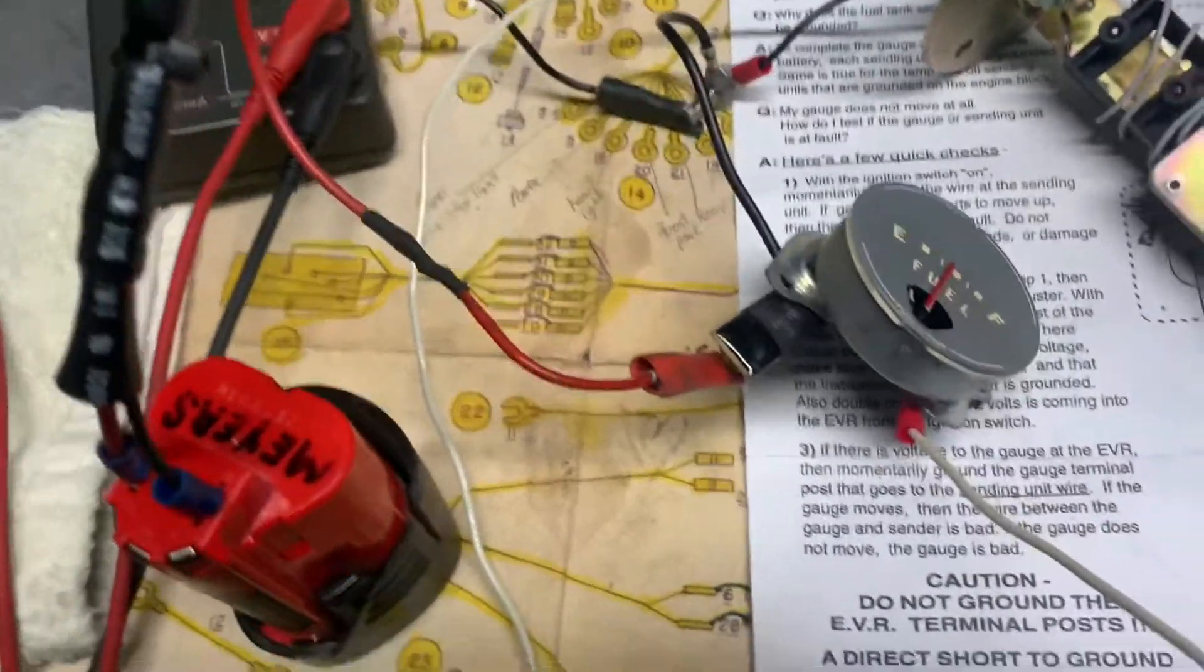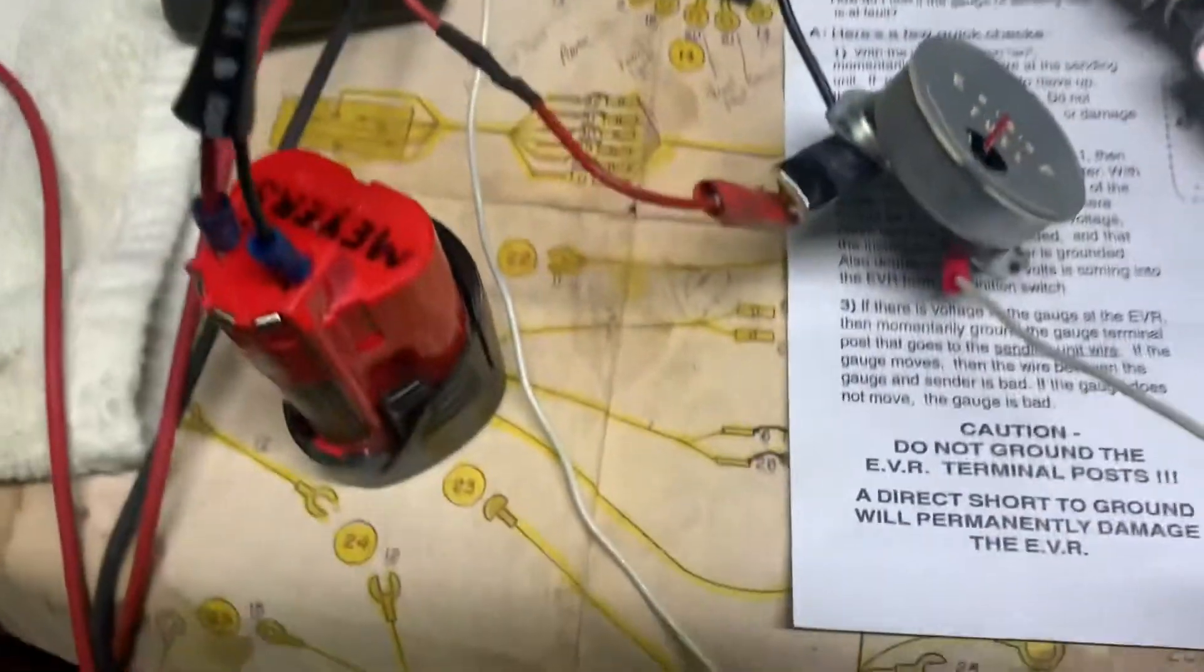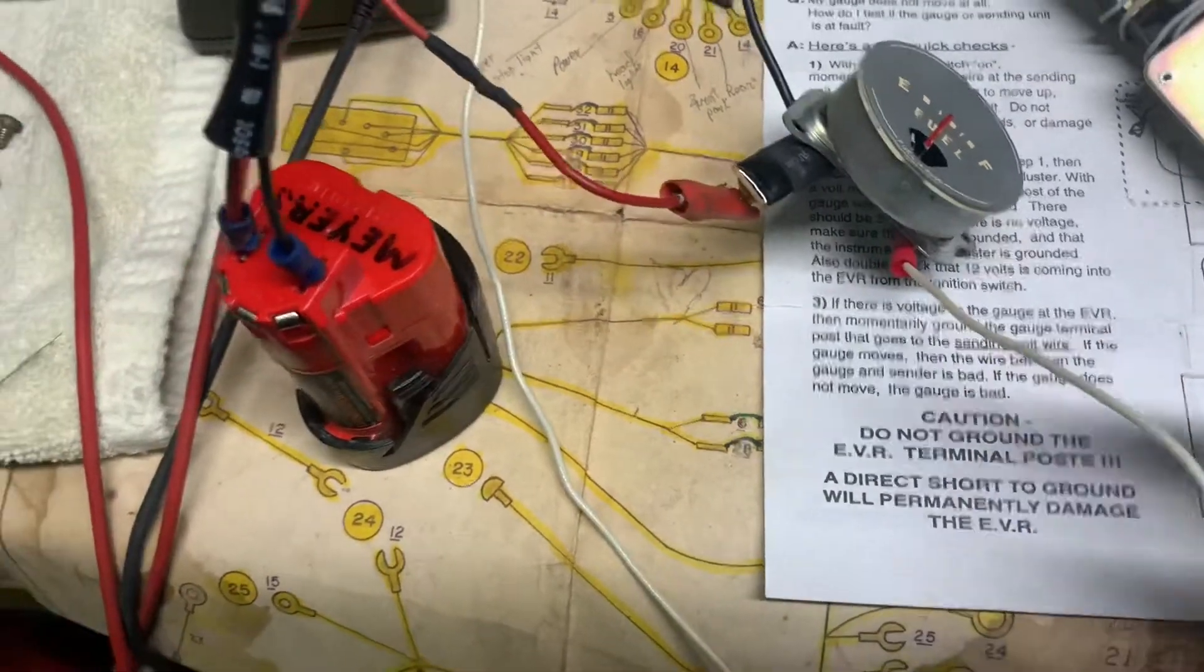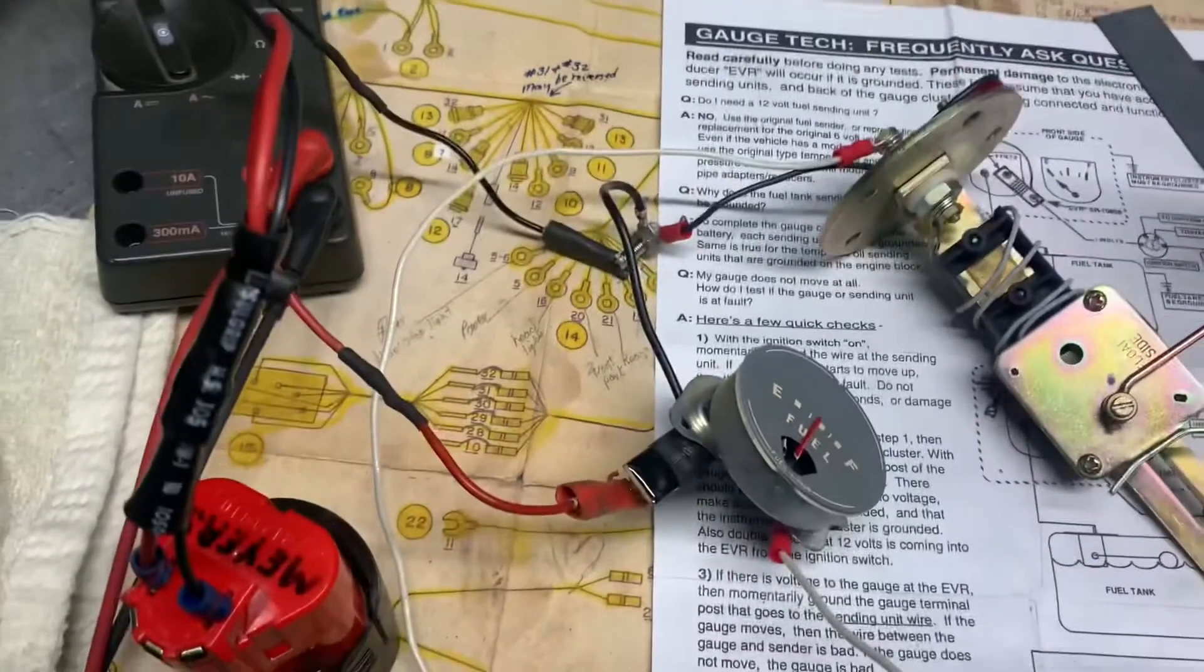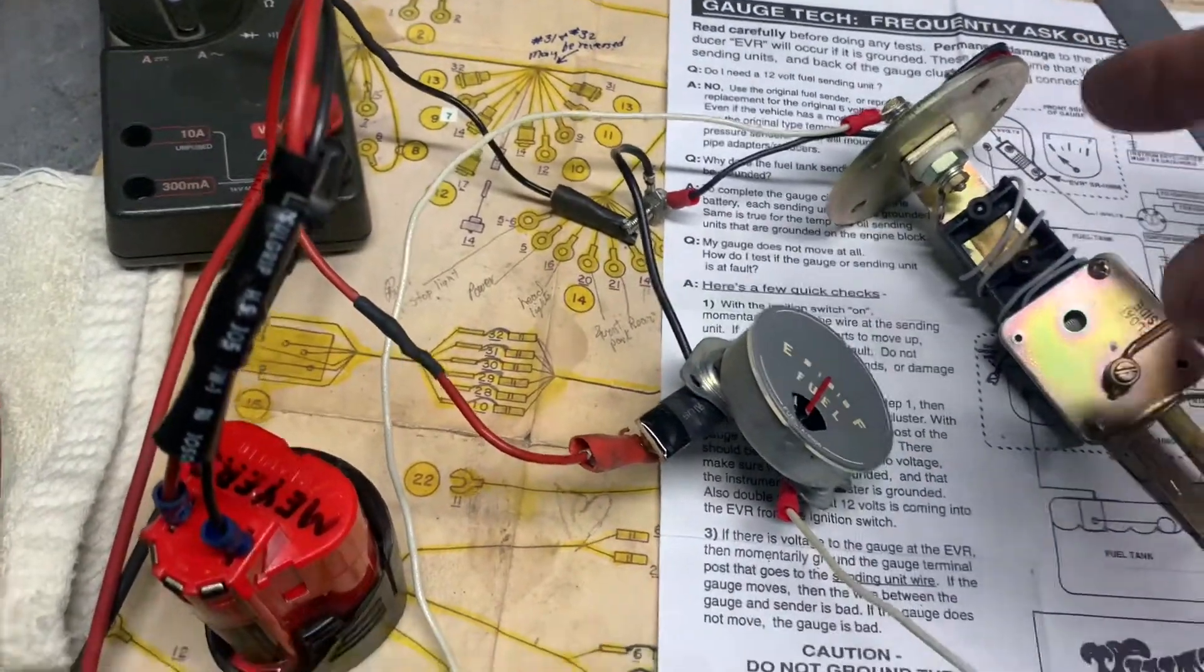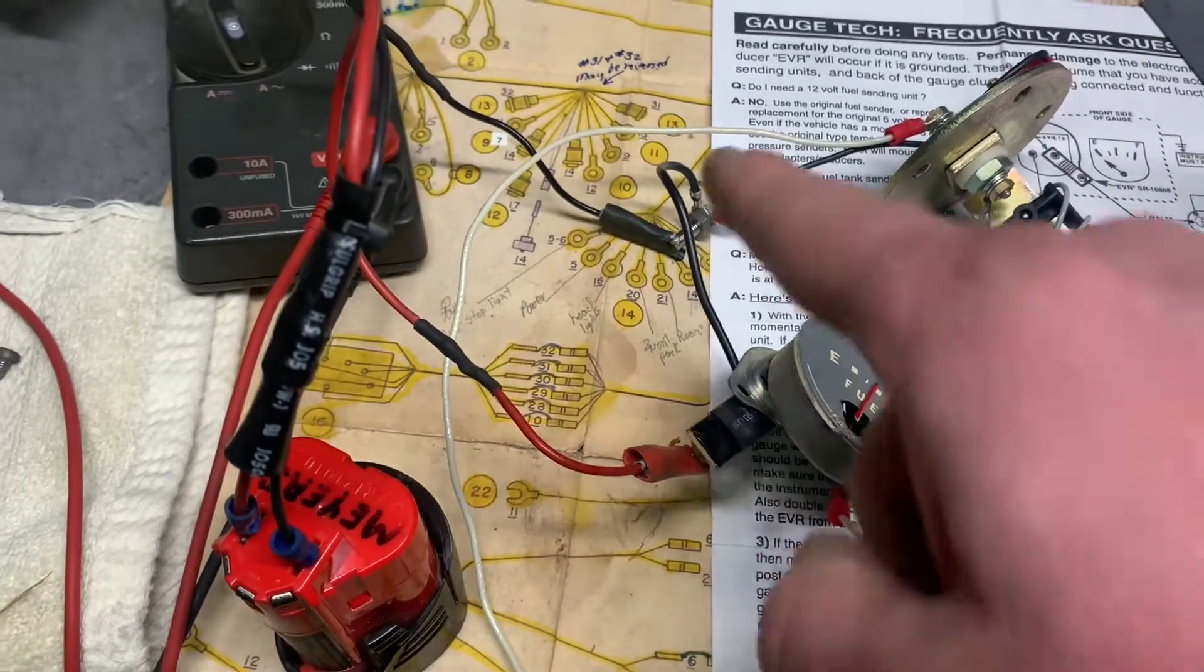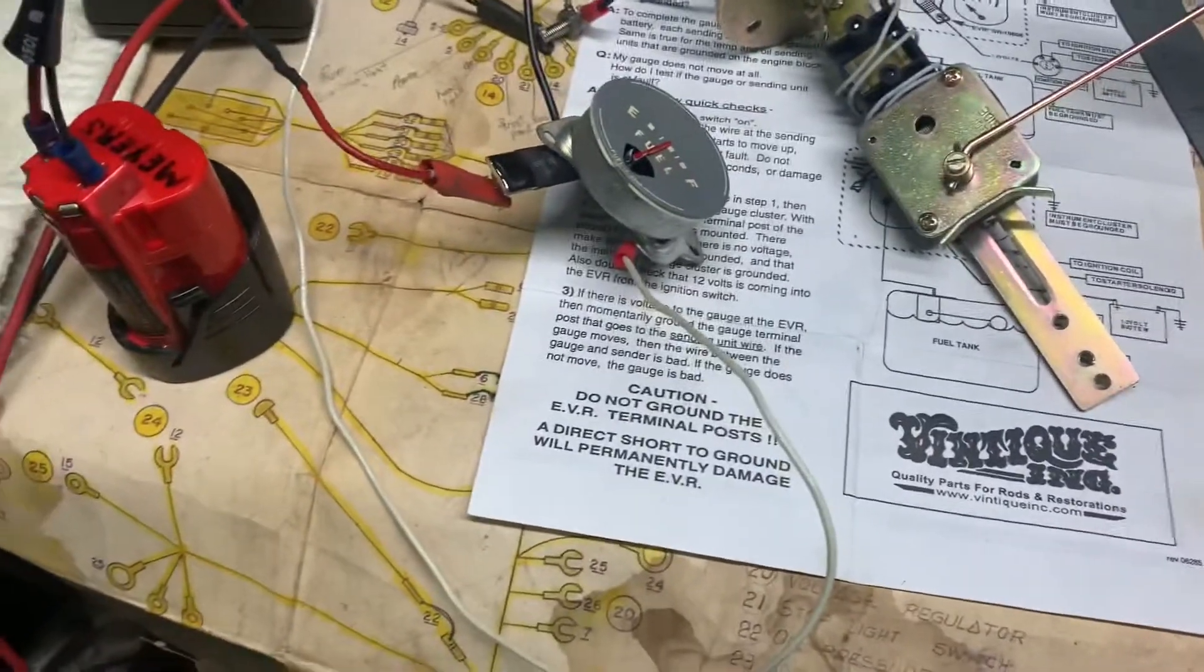So that's the red lead going to my positive on the battery. The sending unit is the white wire right here. This is the white wire from the sending unit and it connects to the top of my sending unit. Then of course the sending unit is grounded, and then my electronic voltage reducer is grounded.